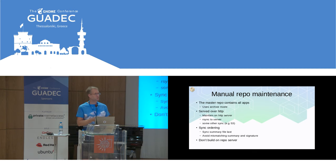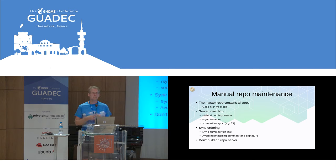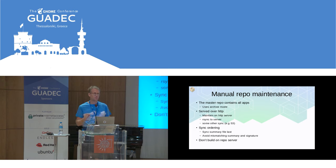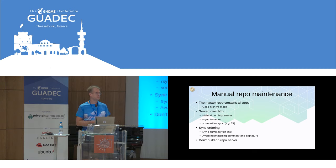You have to be really careful to avoid mismatches between the summary and its signature, because if you download different versions of those the signature will not be correct and clients will complain. Typically those are small files so if you copy them at the same time and move them in place as an atomic operation it won't happen. But you have to be really careful about caching — if you accidentally cache different versions of the signature and summary file, you'll cause the mismatch to persist and all your clients will complain.